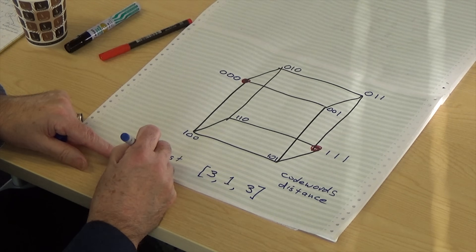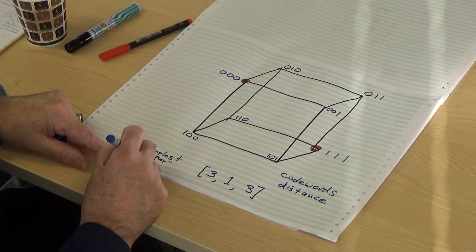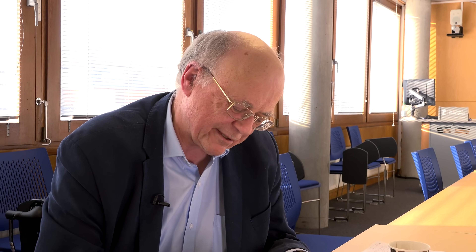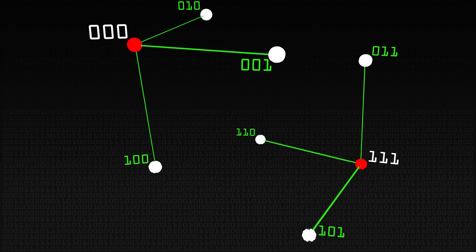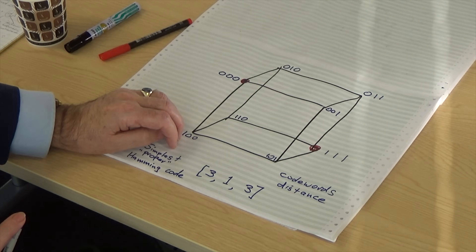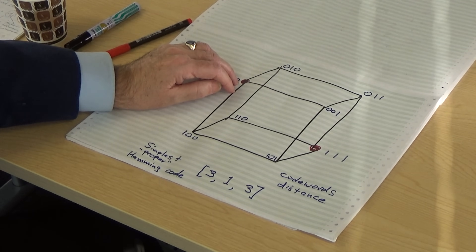3-1-3 is the simplest full Hamming code and it is perfect. What do I mean by saying it is perfect? Every single corner — all eight of them — serves a purpose. A corner is either a code word, the actual thing you're trying to get through and hope it doesn't get damaged, or if it's not a code word it's a correction vector. It's a corner of the cube that's adjacent, which gives you the clue that if you receive that you go to the nearest code word along the cube edge. So every single corner is concerned with either the proper message or how to correct it.